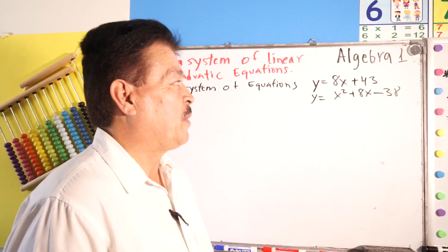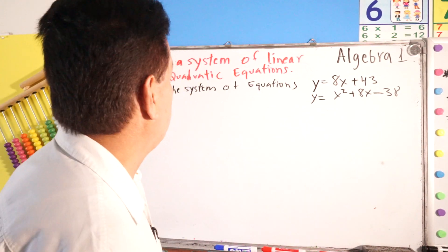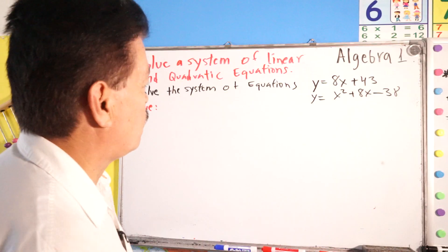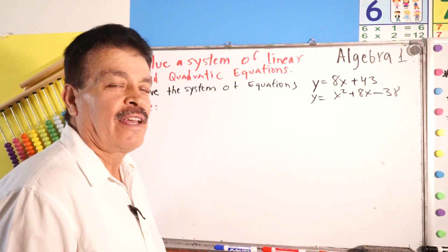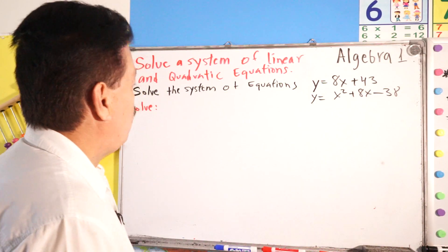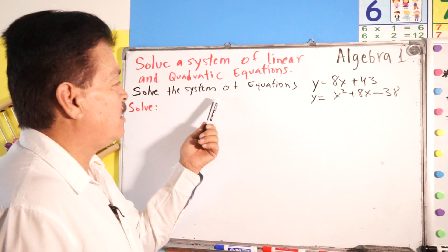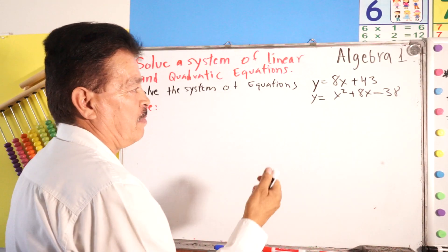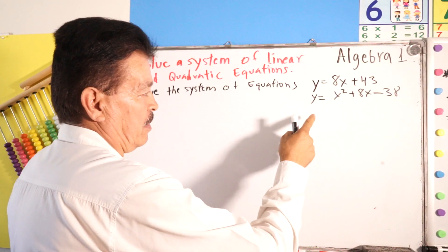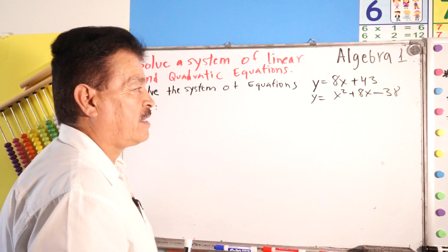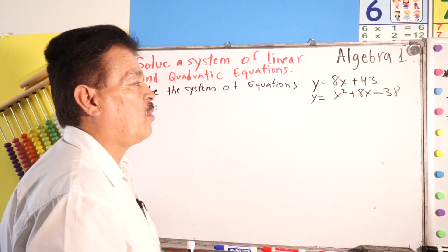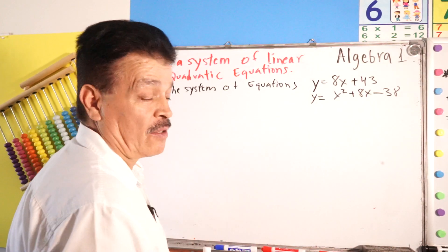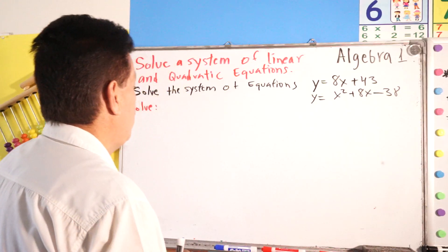Algebra 1. Welcome to Solve a System of the Linear and Quadratic Equation. Solve the system of equations y equals x plus 43 and y equals x to the second power plus 8x minus 38.